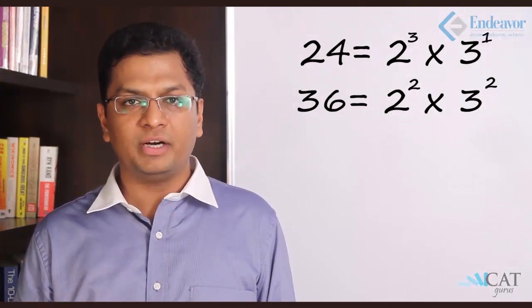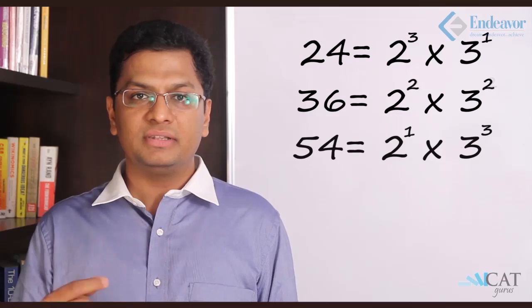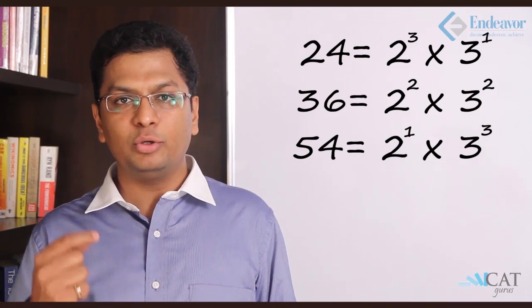36 is nothing but 2 to the power 2 into 3 to the power 2. Let's take the last number 54. This is nothing but 2 to the power 1 into 3 to the power 3.